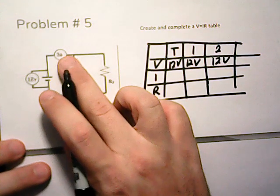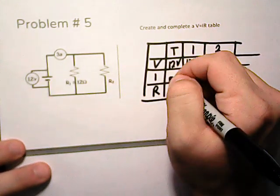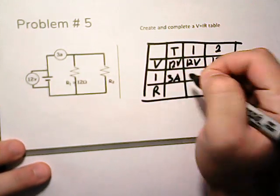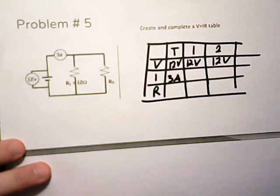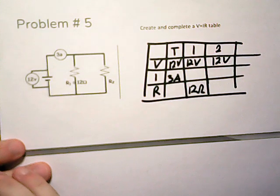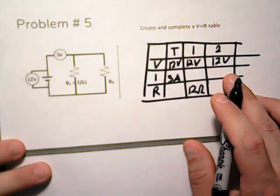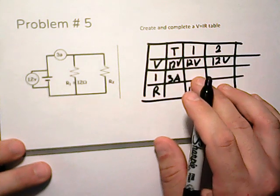Our current is 3 amps. This is the total current. Our resistance one we know is 12 ohms. Resistance two we don't know. We don't know the current for these.